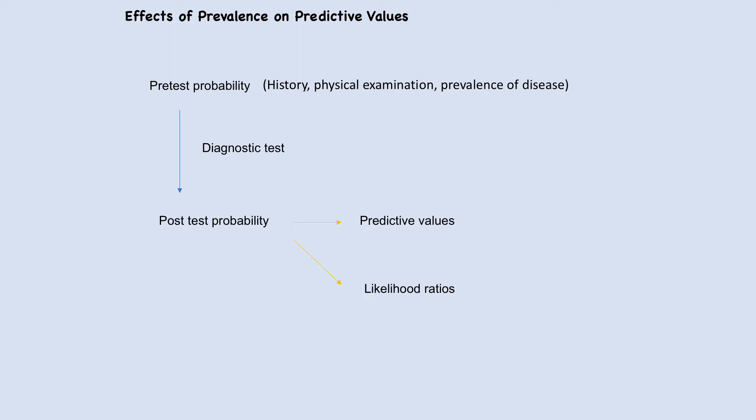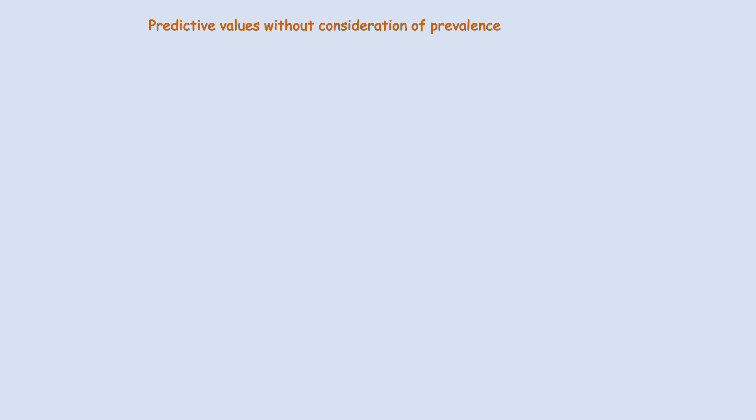Prevalence of disease can significantly affect predictive values, so we need to understand the effect of prevalence on predictive values. First, let's calculate predictive values without consideration of prevalence.